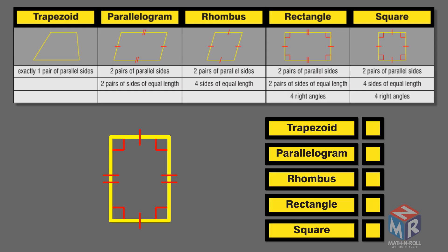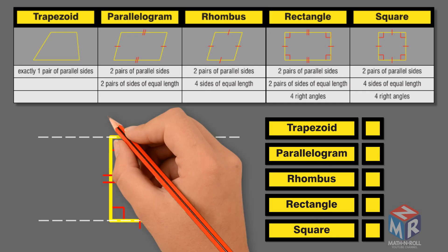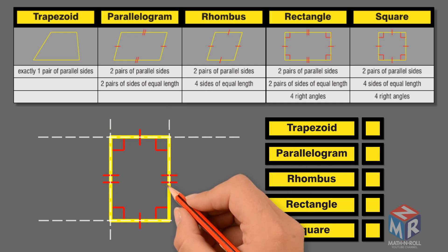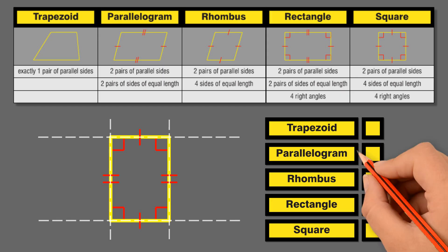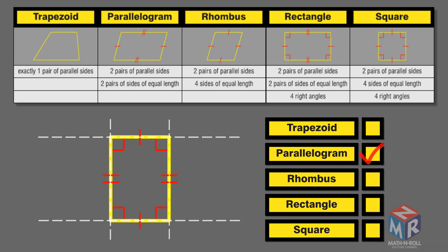Let's try another example. It is not a trapezoid because it has two pairs of parallel sides. It is a parallelogram because it has two pairs of parallel sides and two pairs of sides that are equal in length. It is not a rhombus because the sides are not equal in length. It is a rectangle because it has two pairs of parallel sides, two pairs of sides that are equal in length, and four right angles. It is not a square because the sides are not equal in length.